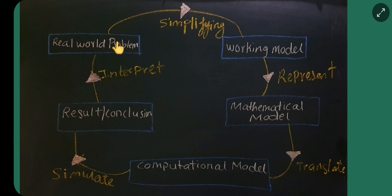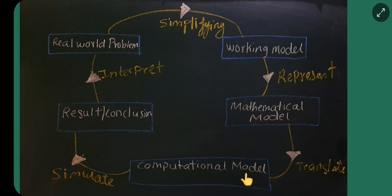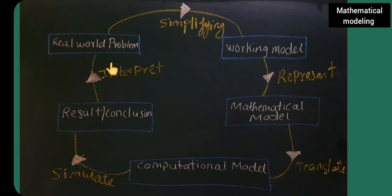In a simple way: we simplify the real world problem into a working model, then it is translated into a computational model which carries out the computation and simulates the results of mathematical modeling, and then interprets it so that we get the desired outcome. In the next lecture, I will be starting with how mathematical modeling can be divided into three steps: that is, formulation, evaluation, and finding the solution. Thanks for watching.